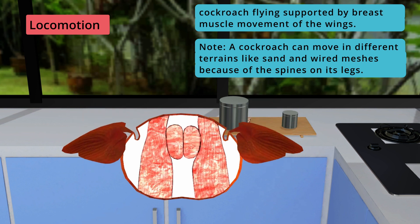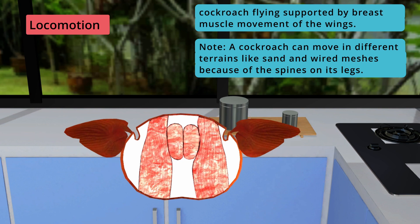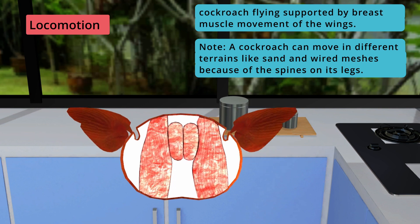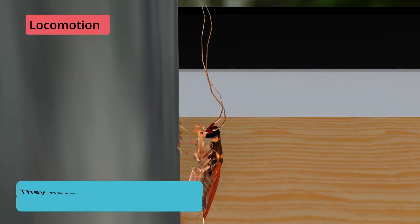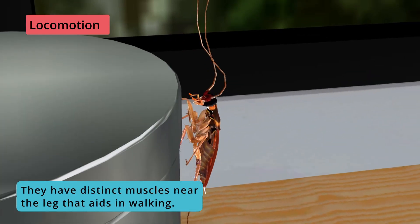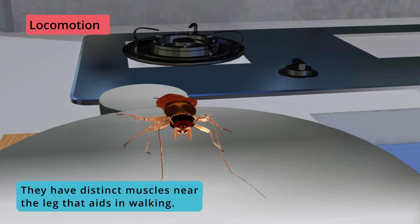Note: a cockroach can move in different terrains like sand and varied surfaces because of the spines on its legs. Climb: they have distinct muscles near the leg that aids in climbing.